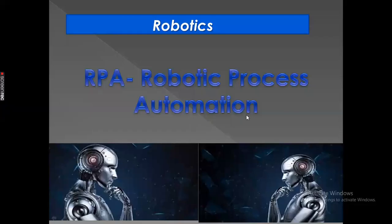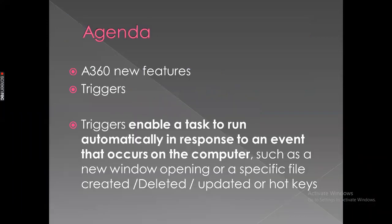Hi guys, welcome back to another session on RPA Automation Anywhere A360. I'm going to upload a series of videos on Automation Anywhere A360 new features and advanced features with the help of examples. Today we are going to learn triggers. In Automation Anywhere A360 we have different kinds of triggers available like email trigger, file trigger, folder trigger, service trigger, and hotkeys.